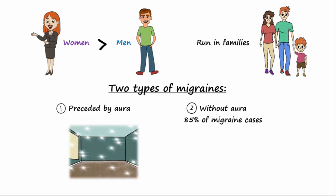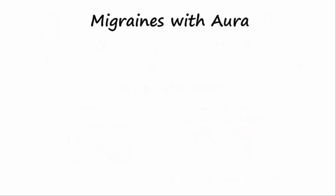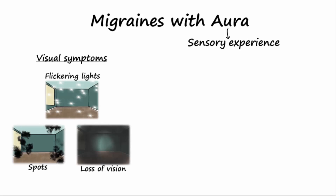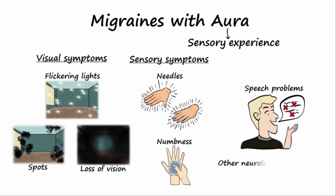Migraines without aura may be preceded by fatigue and irritability. An aura is a sensory experience that precedes the headache. Auras typically consist of visual symptoms such as flickering lights, spots, or loss of vision. Sensory symptoms may include needle sensations or numbness, and problems with speech or other neurological symptoms.